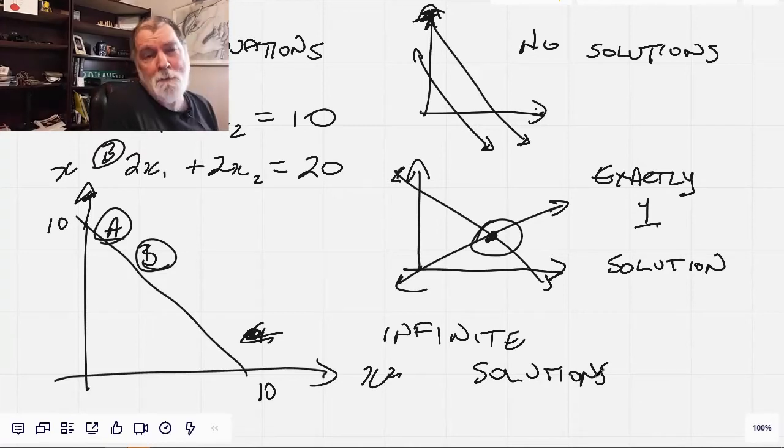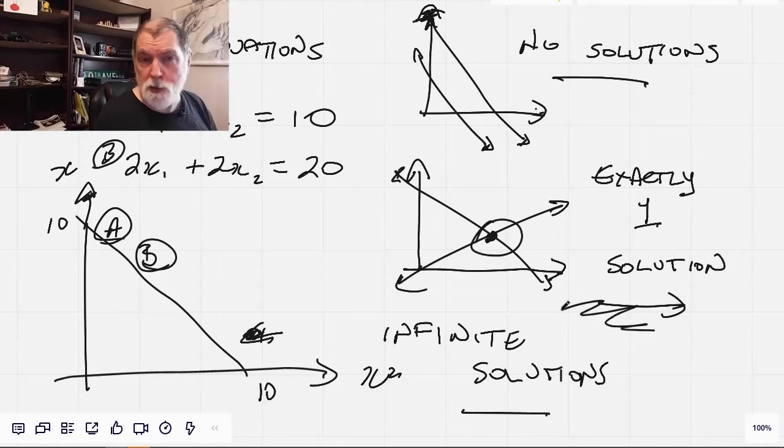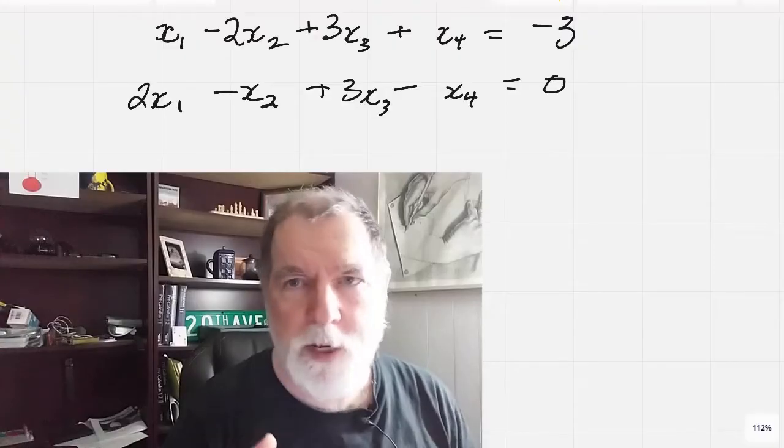This is what you want to ask when you're solving a system of linear equations like this. Are there no solutions? An infinite number of solutions? Or a unique solution? Those are your three options. Also, if you feel that you're getting some value out of this video, please remember to hit the like button so that the algorithm will look upon me favorably.